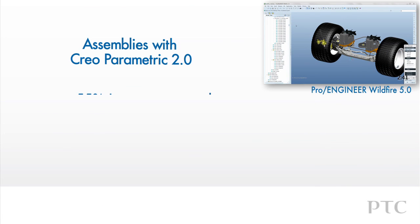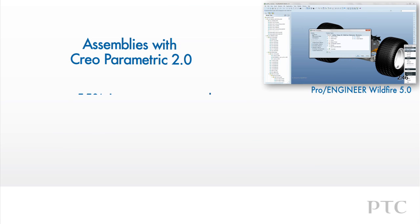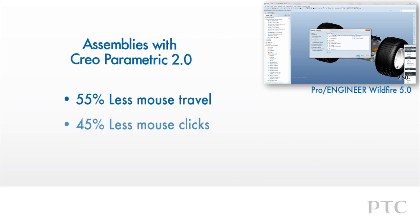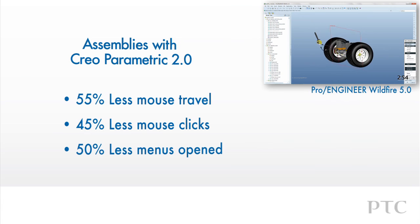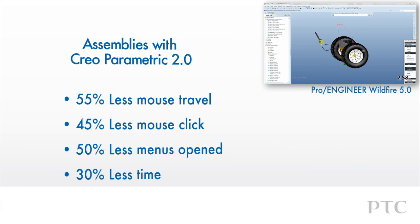We've shown some of the key highlights in assembly with CREO Parametric, introducing new capabilities and streamlined workflows. The result is improved design productivity — even in this short comparison, I saved 30% of the time taken to achieve the same result with CREO Parametric compared to Pro Engineer Wildfire.